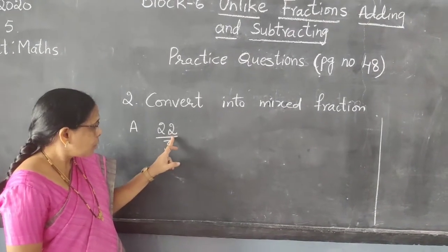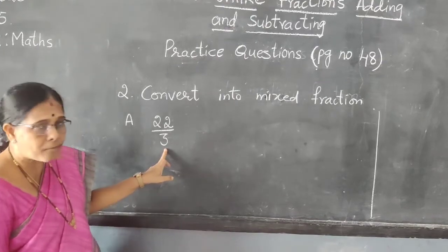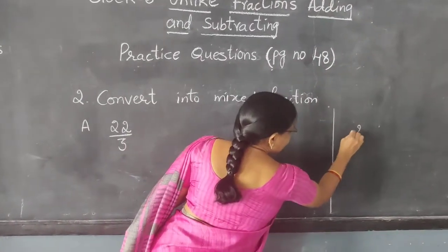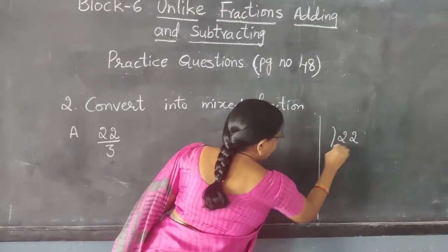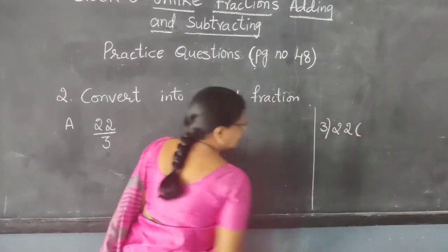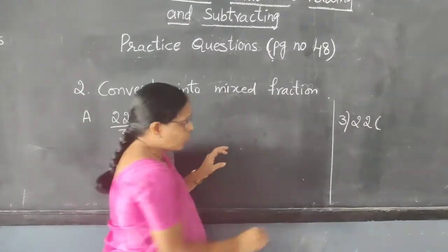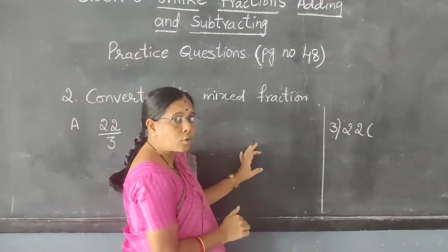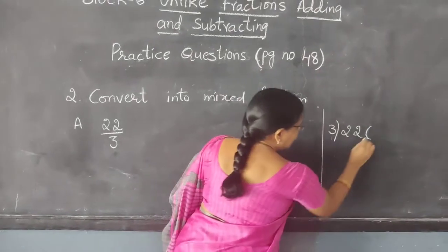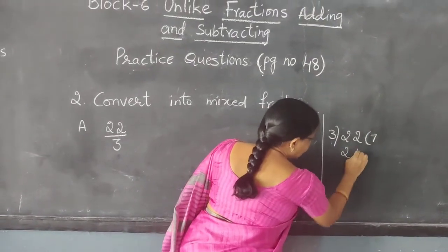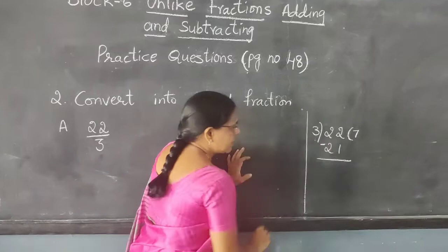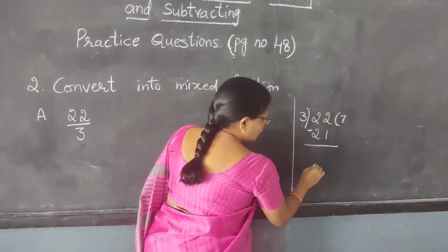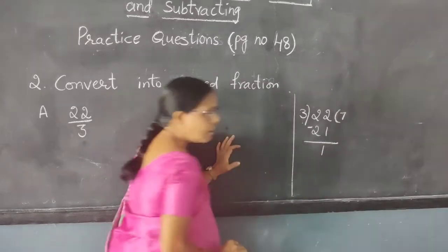Now I will show: you have to divide 22 by 3. So, in 22 divided by 3 — how many times does 3 go into 22? 3 sevens are 21. 22 minus 21 is 1. So 1 is the remainder.